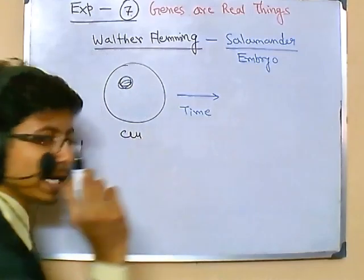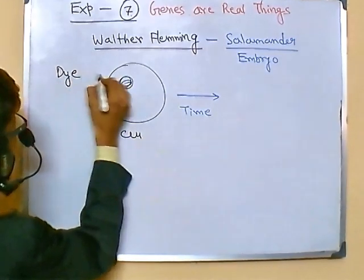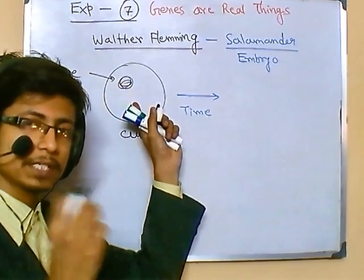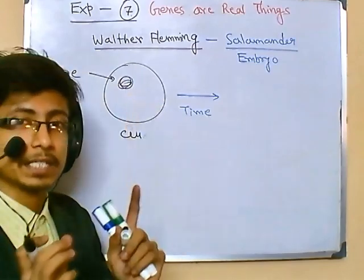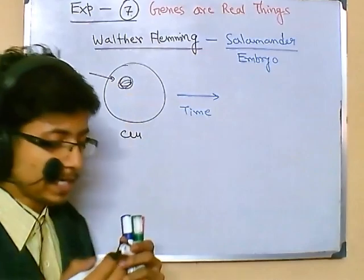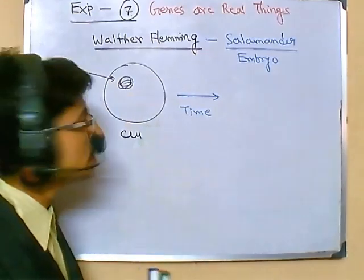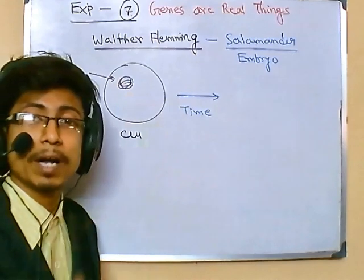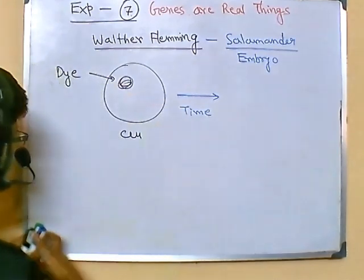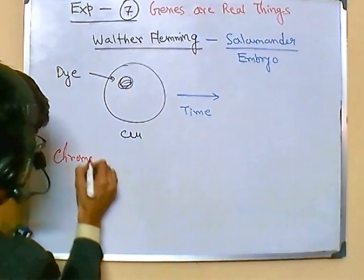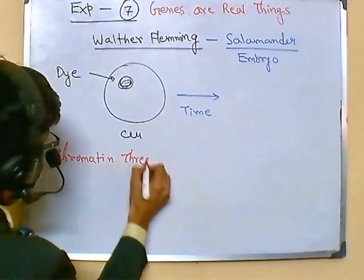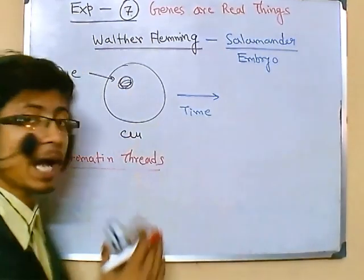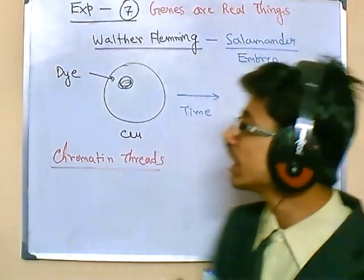In each cell he applied some dye. Dye is very important to visualize that dark dot present on the cell, which is termed as the factor — the factor or the chromosome. At the time of Walter Fleming, he termed these factors, those dark thread-like structures, as chromatin threads. He found that during those time gaps, the chromatin threads were more easily visible than they generally used to be.